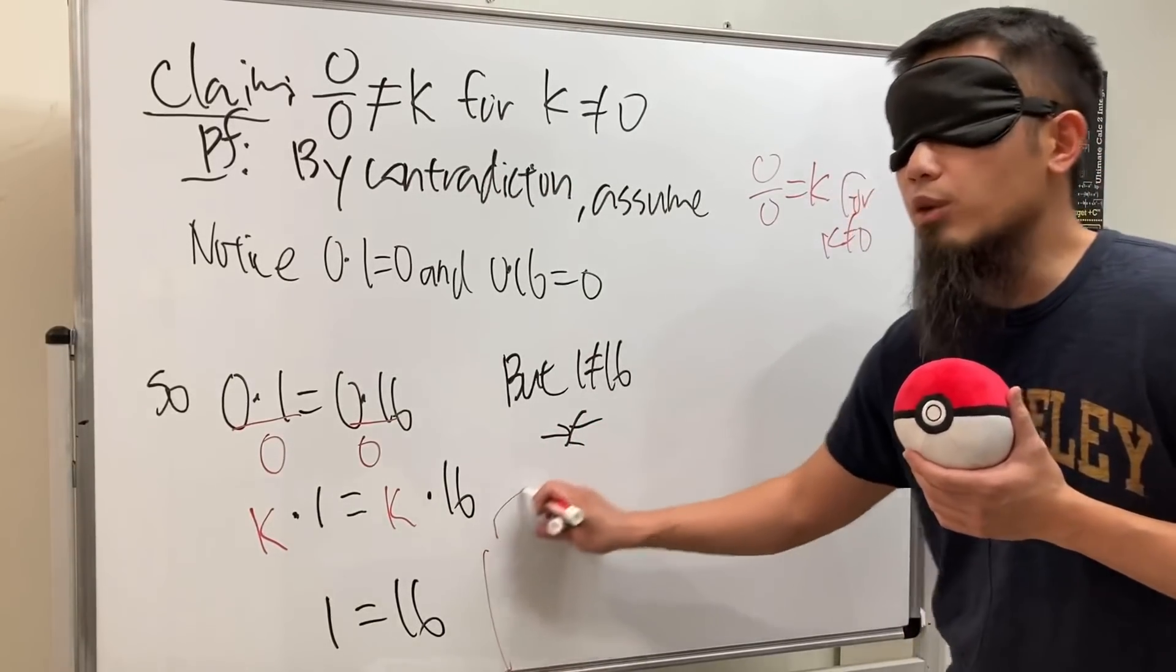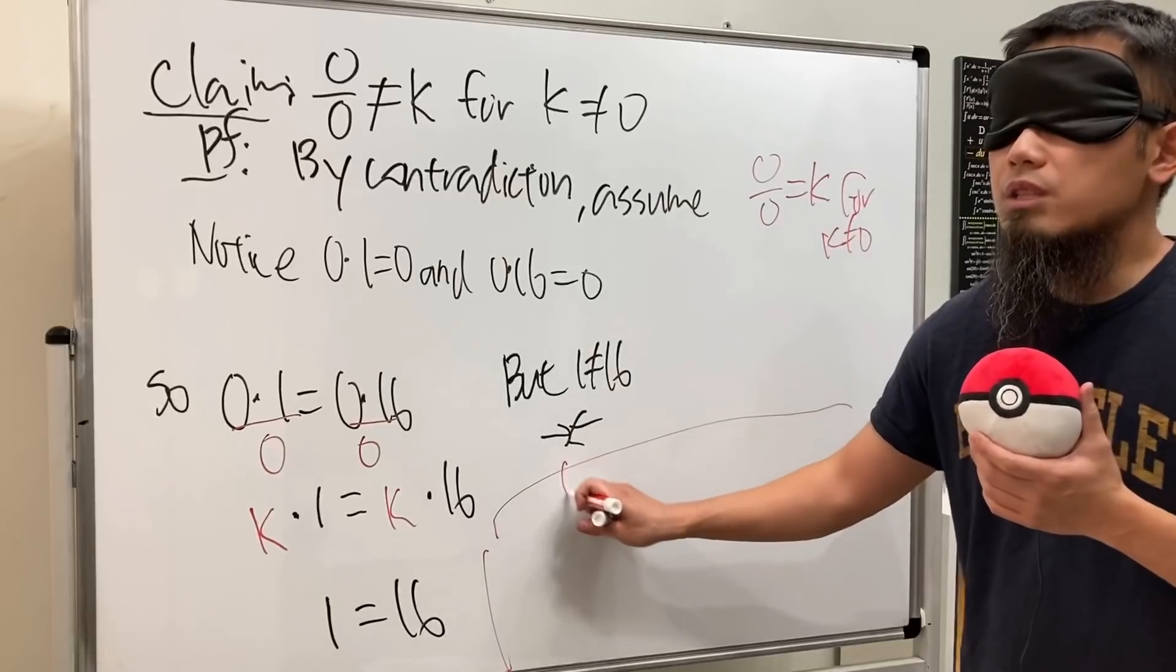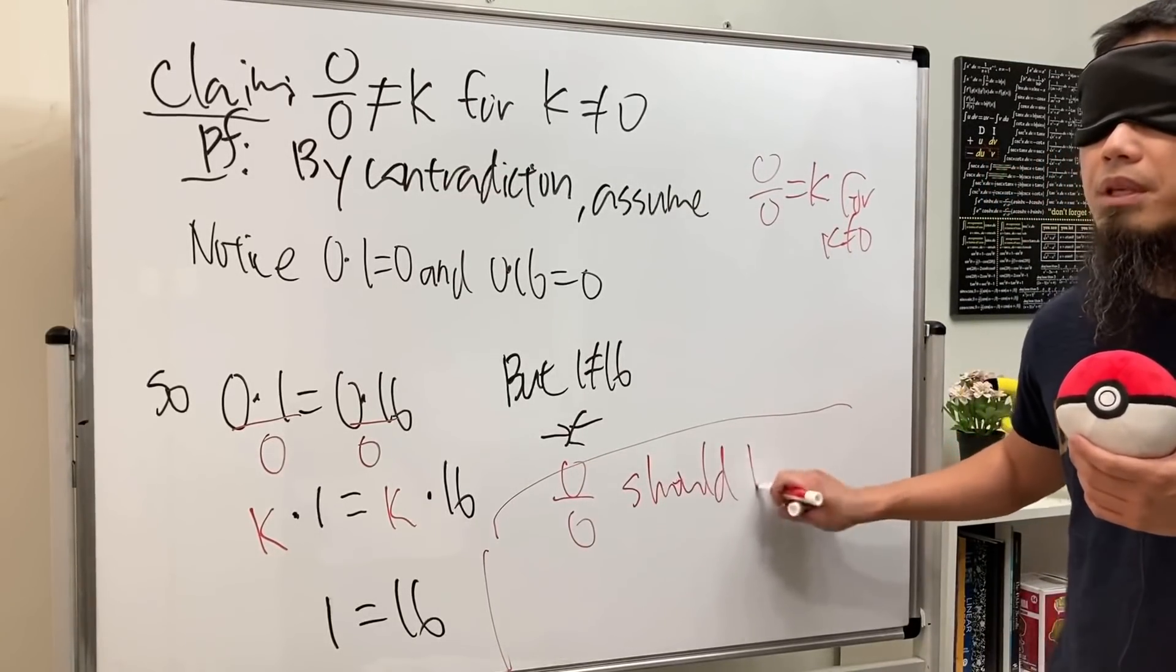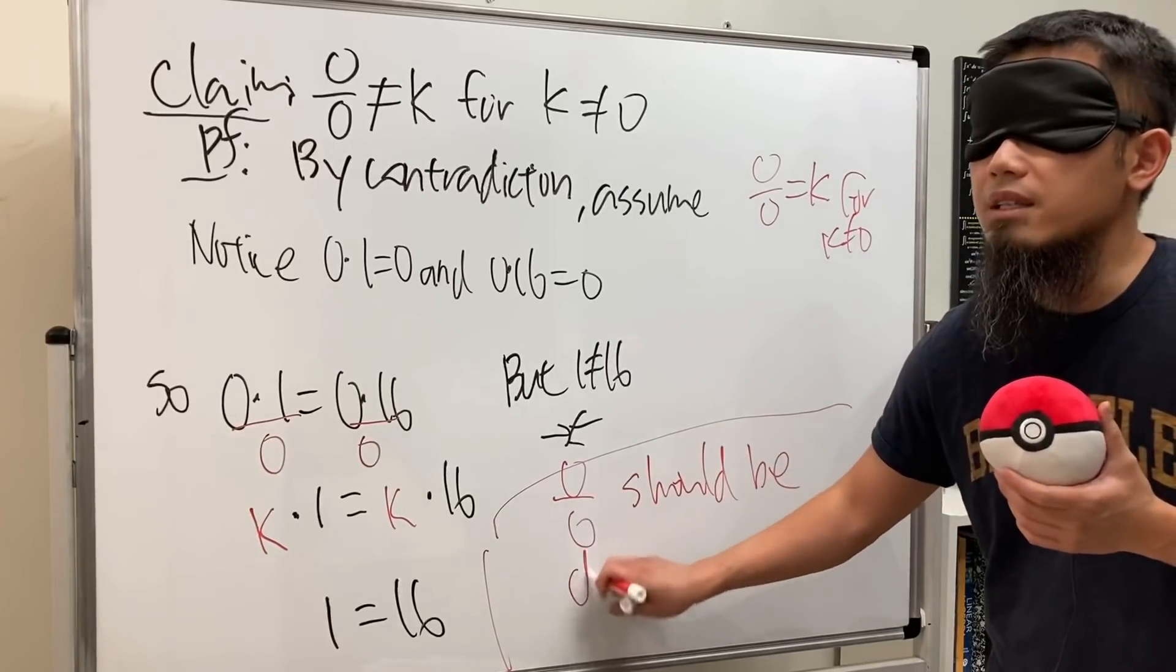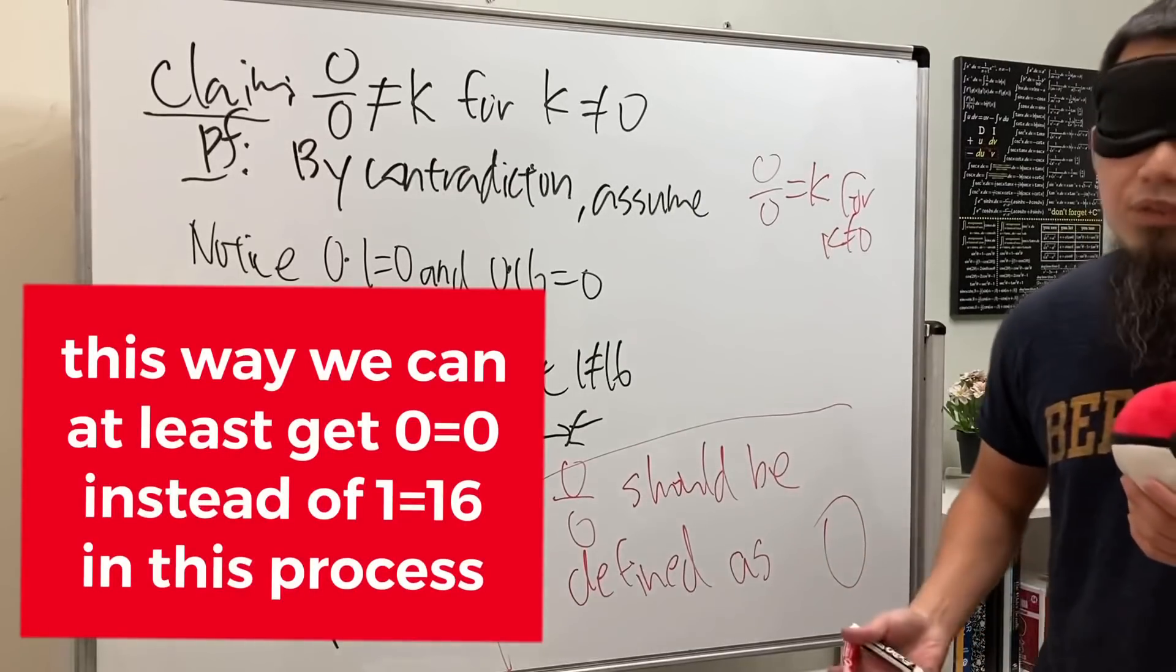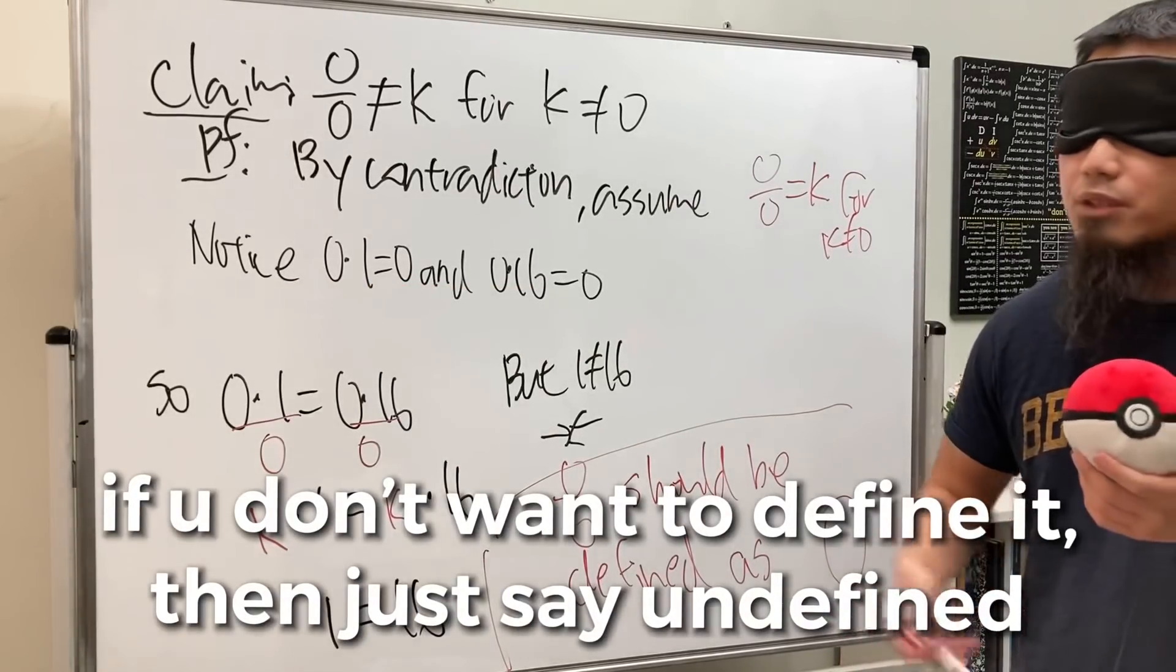So in my opinion, I'll write this down right here for you guys: zero over zero should be defined as zero if you ever want to define it. But if you don't want to define it, just undefined, that's it.